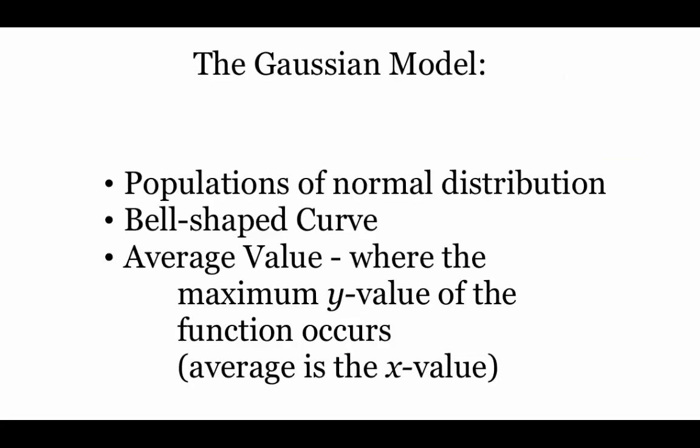With our Gaussian model, we use that to represent a population that has normal distribution, which is how we get the bell-shaped curve. To find the average value, we're going to look for the highest y value or the maximum y value. And then if we're looking for the average, we're just going to grab that corresponding x value.